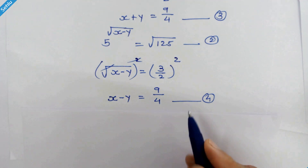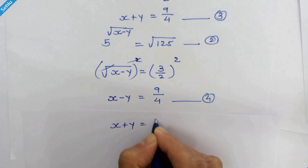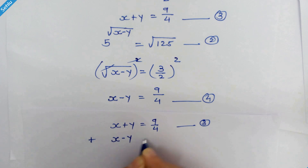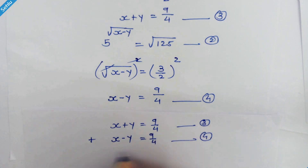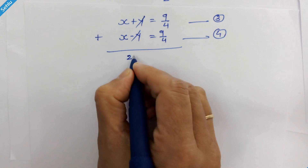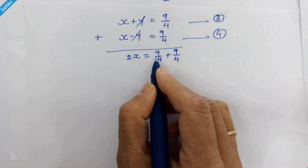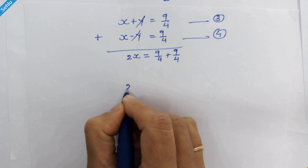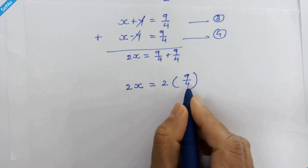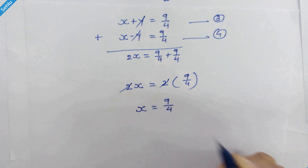Now we will add equation 3 and equation 4. x + y = 9/4 plus x − y = 9/4. The y terms cancel out, so we have 2x = 9/4 + 9/4, which is 2 × 9/4. Dividing both sides by 2, the 2s cancel out and we get x = 9/4.